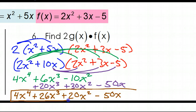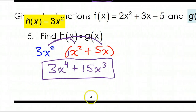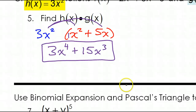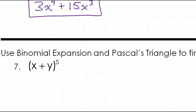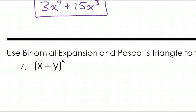I'm going to stop this video here — we'll call it part 1. Starting with number 7, we'll be doing binomial expansion using Pascal's triangle, which is a completely different concept, so let's put that in a different video.